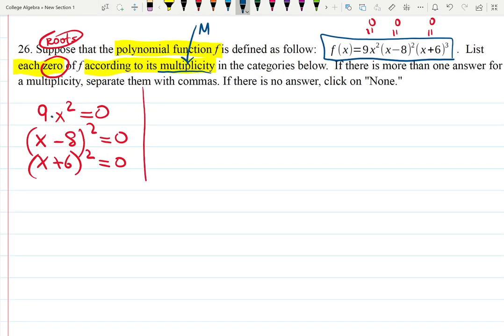9x² can be 0 when x is 0, but how many times? You're imagining it's 9 times x times x equals 0, so multiplicity is 2.